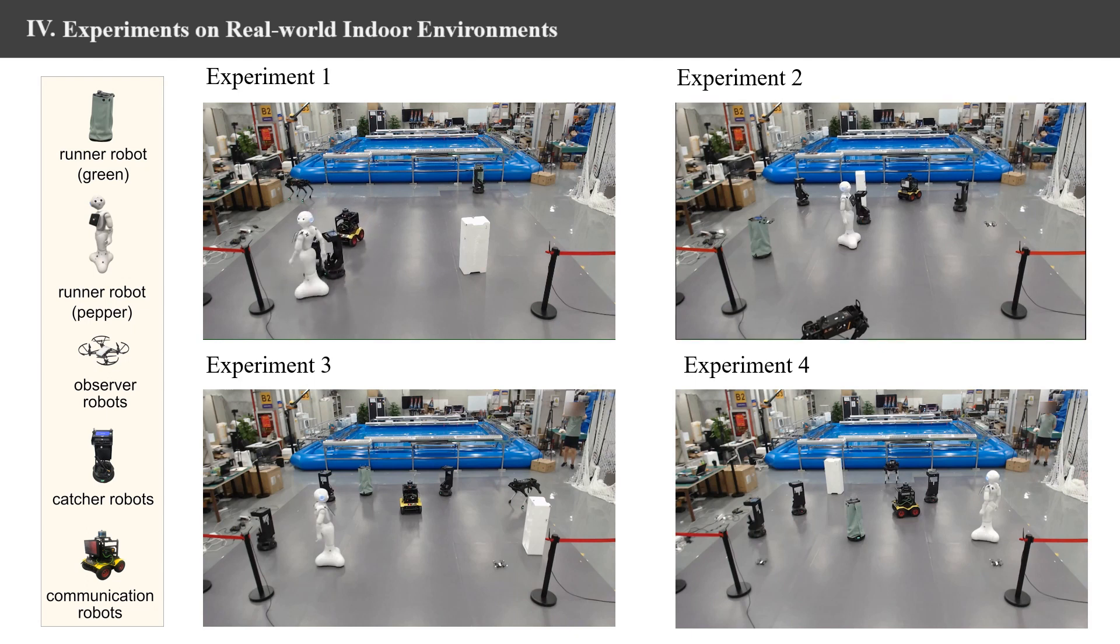The white runner robot sees that there is a moving obstacle blocking its way, and it decides to move back. However, it instantly realizes that there is a catcher robot following it. It then turns again, but it is too late to run away.